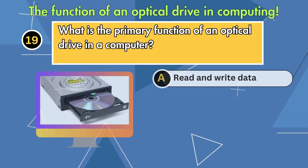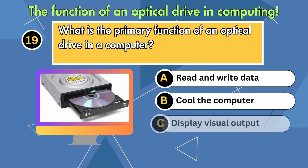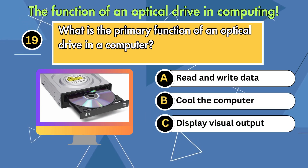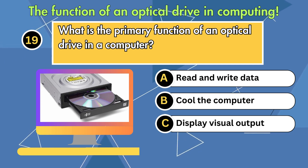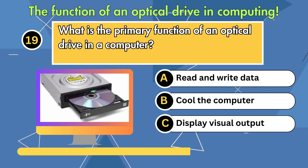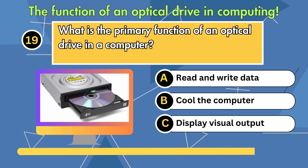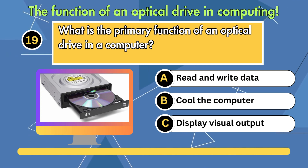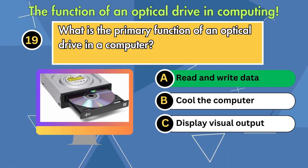What is the primary function of an optical drive in a computer? Option 1: Read and write data. Option 2: Cool the computer. Option 3: Display visual output. Answer is read and write data.